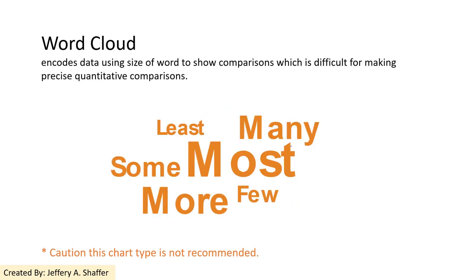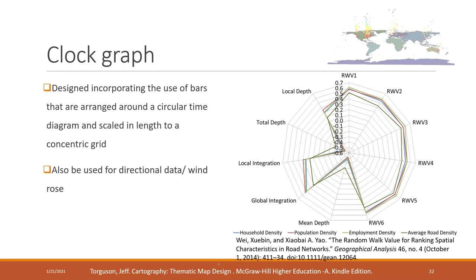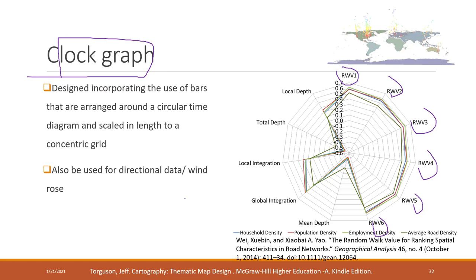The word cloud uses size to represent the frequency of different words, and is also not recommended. The clock graph is useful for comparing values across many categories — if you have a lot of categories and want to compare them altogether, you can consider using the clock graph. It can also be used for directional data like wind roses. It is a variation of the line chart placed in a circular format.